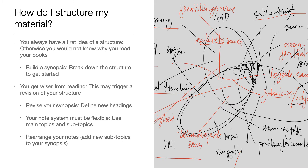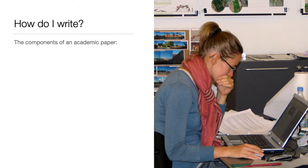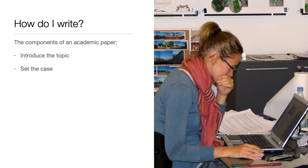So once all of this is more or less in place, at some point you start writing. Academic paper writing is a quite stringent process. There are some components that should go into an academic paper. First of all, you must introduce your topic — what this paper is about and from what angle. Then once you've introduced your topic, you set the case — using the metaphor of a court case. This is what is at play, this is what I found out, and this is how I've approached my problem. You may introduce your research method if it's a research paper, or explain what literature you've been consulting if it's a literature review.